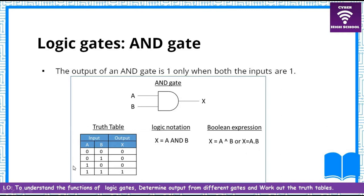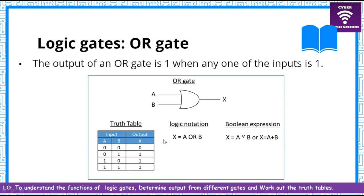Remember the truth table: the output of an AND gate will always have zeroes and only a one when both inputs are on. The next gate is the OR gate. From the word 'or,' we are simply adding. In terms of shape, you can see the difference: the AND gate is straight on the input end, but the OR gate curves in. This is the symbol of the OR gate.